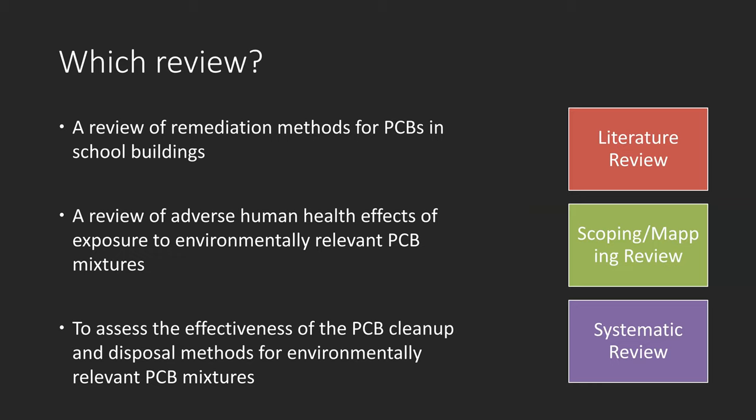Let's look at this set of examples. A review of remediation methods for PCBs in school buildings — that's like a scoping and mapping review. A review of adverse human health effects of exposure to environmentally relevant PCB mixtures — also a scoping and mapping review. To assess the effectiveness of PCB cleanup and disposal methods for environmentally relevant PCB mixtures — this should be a systematic review. We can see that these examples use 'effectiveness' as a keyword in the systematic reviews.